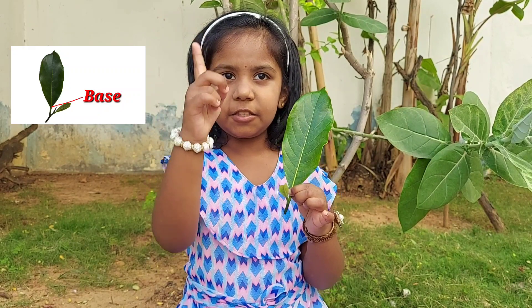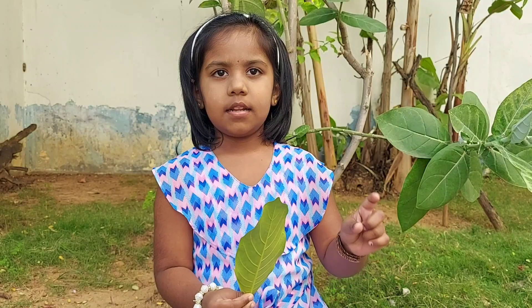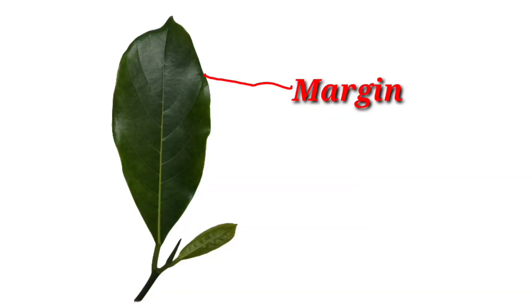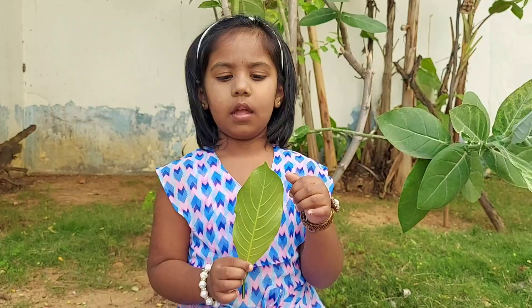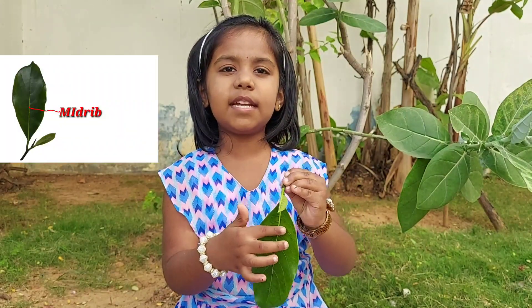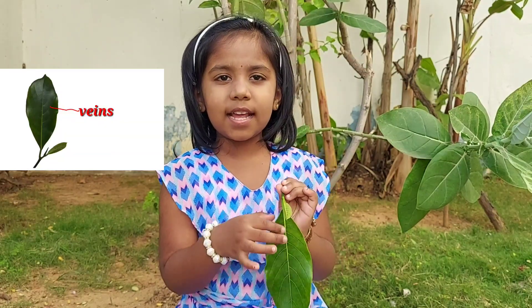Now I will tell you the parts of the leaf. The first part is the leaf base. The second part — this outline — is the margin. The third part is the apex. This middle thick line is the midrib, and the small lines are the veins.